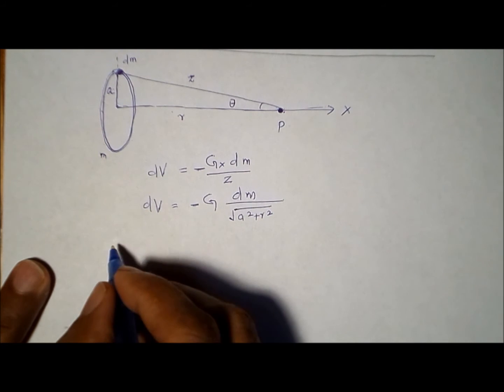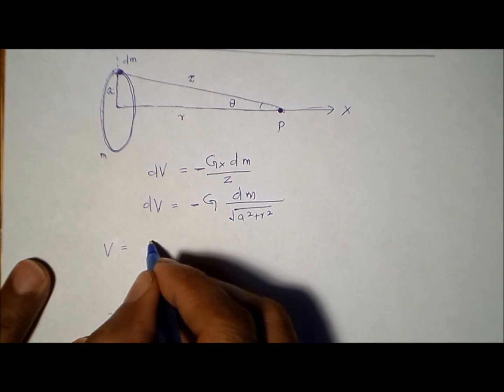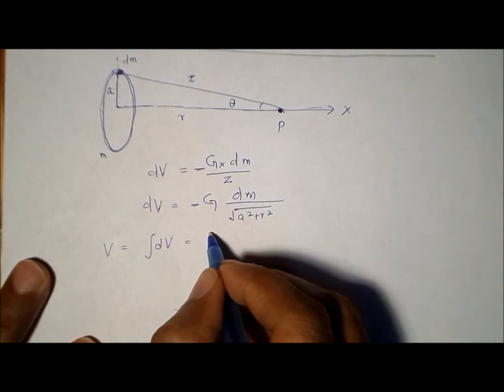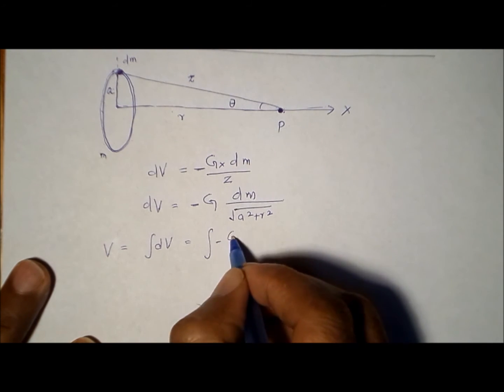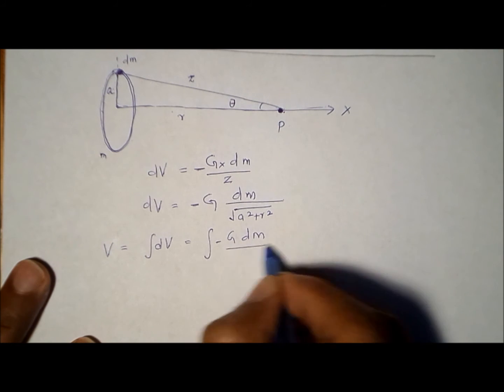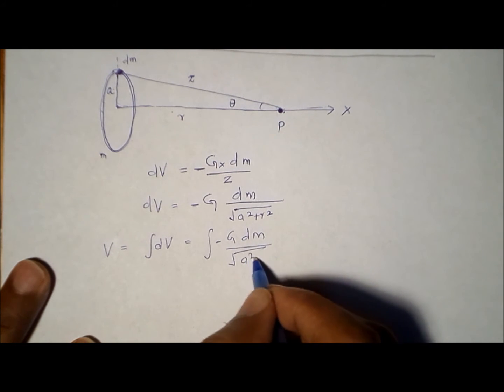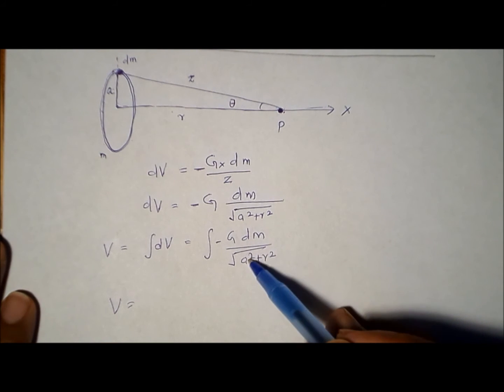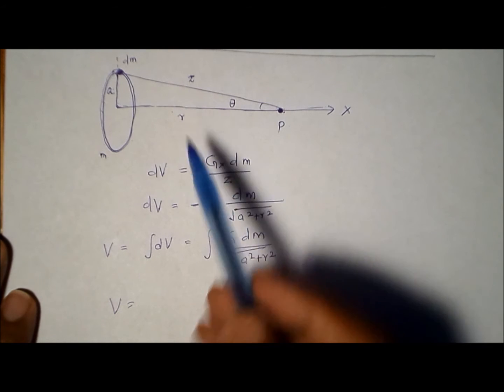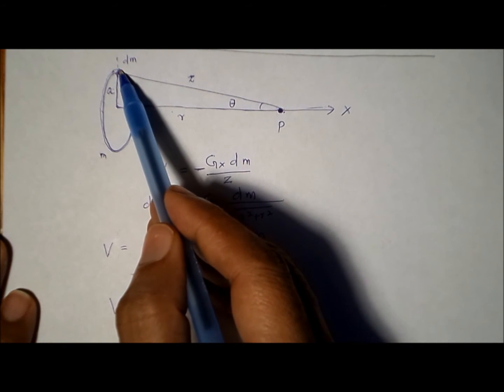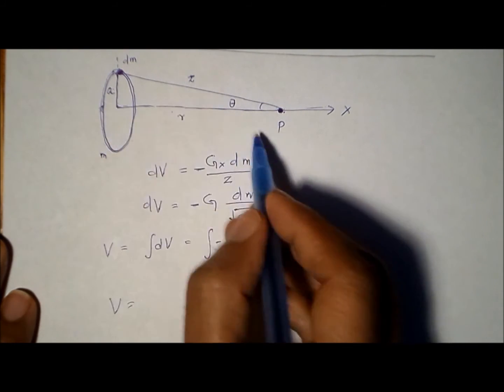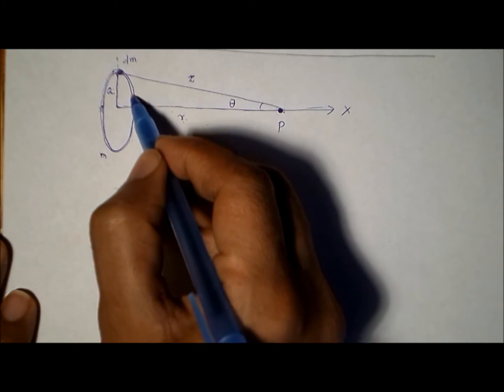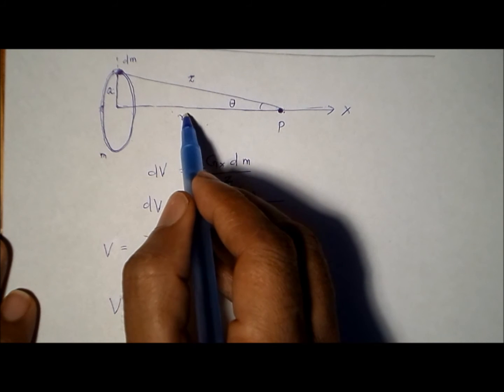The total potential V is given by the integral of dV across the whole ring, and we can also write it as integral of minus G dm divided by square root of a squared plus r squared. Now, a is independent of m, which means that whether you take this mass or this piece of mass, a and r do not change.